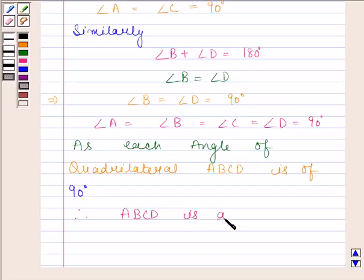In a rectangle, all angles are 90 degrees. Hence, we have proved that ABCD is a rectangle.